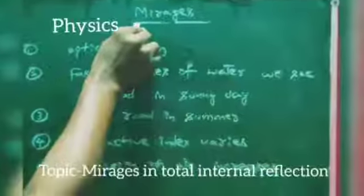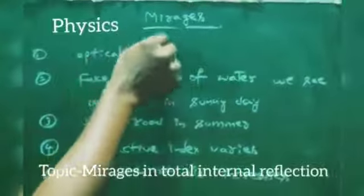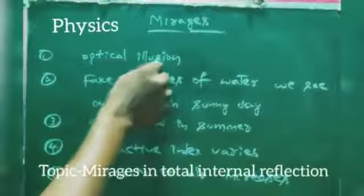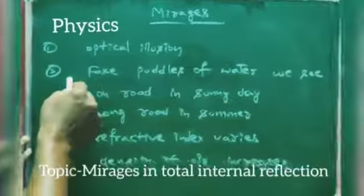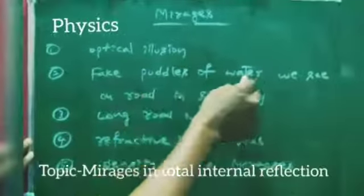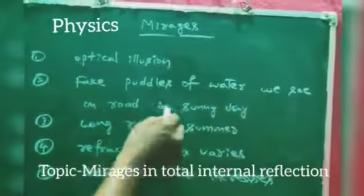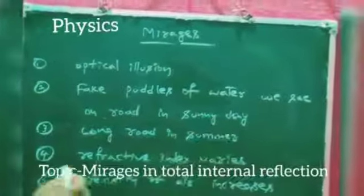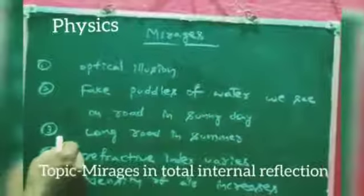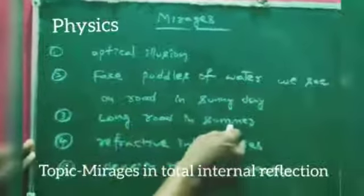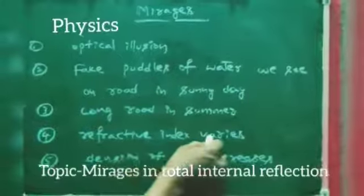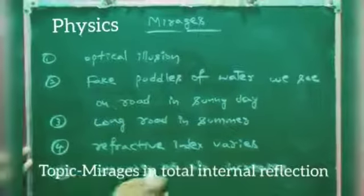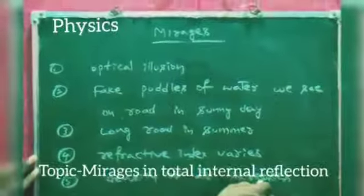In mirages, first point: how is a mirage created? Due to optical illusion. Second point: fake puddles of water we see on a road on a sunny day. Third point: long road in summer. Fourth point: refractive index varies. Fifth point: density of air increases.